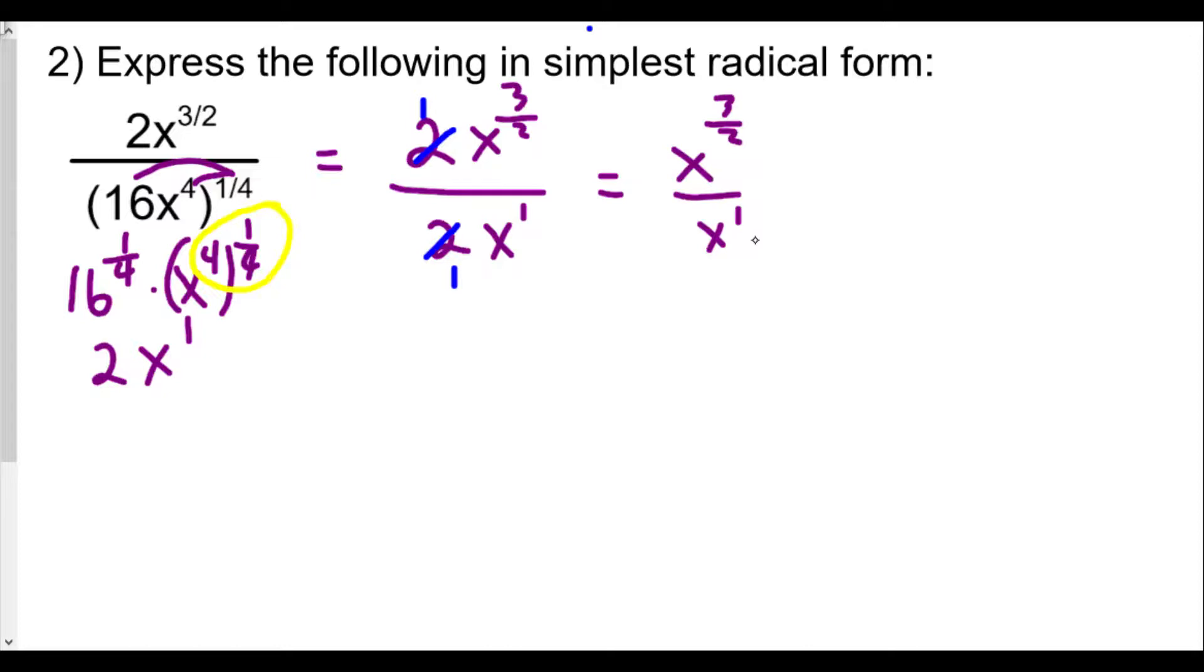We now apply what's called our quotient rule. When you divide two numbers with the same base, we keep the base the same and subtract the exponents. We have the numerator exponent minus the denominator exponent: three halves minus one, which is x to the one half power. We're almost done.